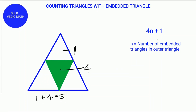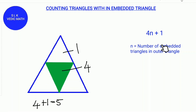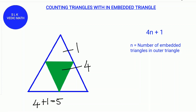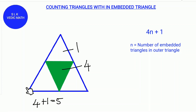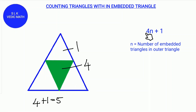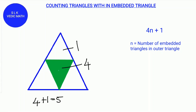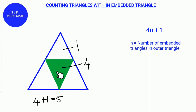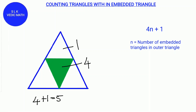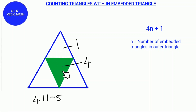We can also use the formula 4n plus 1, where n is the number of Embedded Triangles in an outer triangle, and 1 comes from the big triangle. So n is the number of Embedded Triangles. We get 4 from this one Embedded Triangle, which makes 4 triangles. This is how we get the 4.